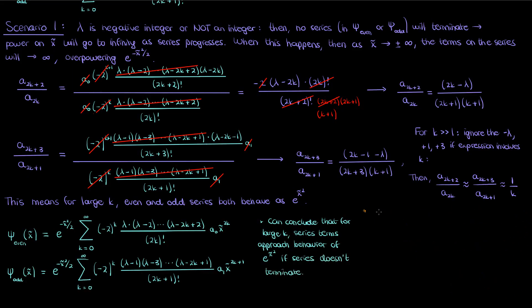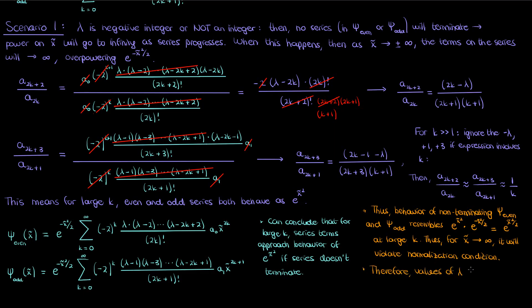As a result, since we're only multiplying by e to the negative x tilde squared over 2 out front, the behavior of ψ overall, both ψ_even and ψ_odd, will resemble that of e to the x tilde squared over 2 when the respective series does not terminate. This is a problem because when x tilde gets to the edges of the domain, ψ_even and ψ_odd will also blow up, which will clearly violate the normalization condition. ψ will not be normalizable when the series does not terminate. This means that values of λ corresponding to scenario 1 are not physically valid, so λ cannot be a non-integer or a negative integer.